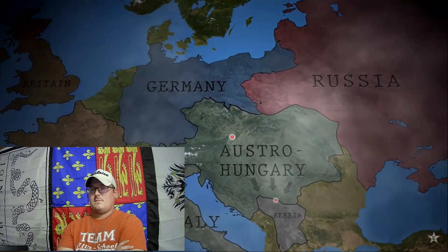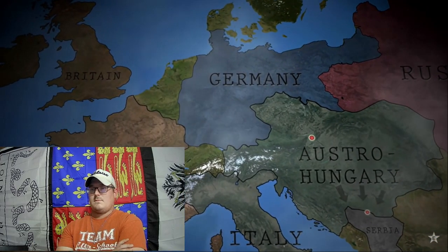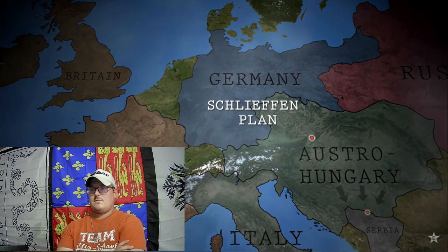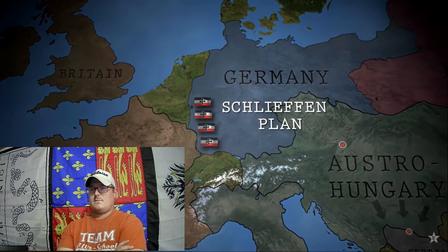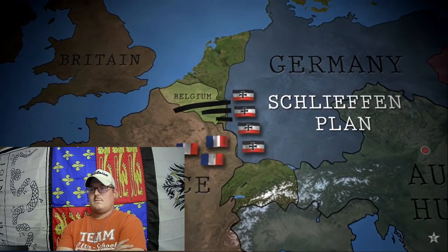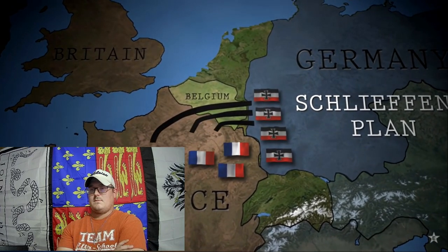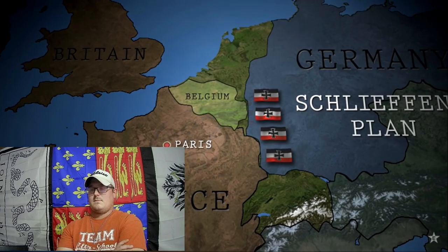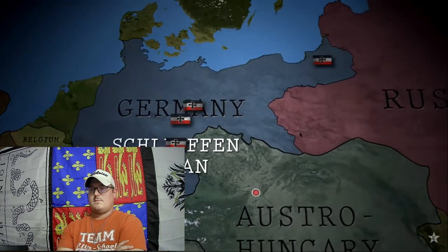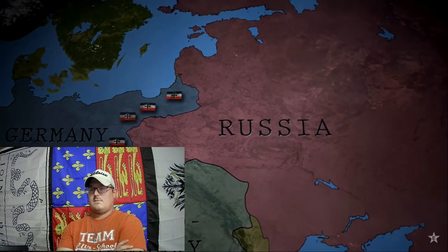Germany knows war with Russia means war with Russia's ally, France. It has developed the Schlieffen Plan to meet this threat of a war on two fronts. First, its armies will advance rapidly through neutral Belgium to encircle and destroy French armies near Paris and win a quick victory. Then its forces can move east to deal with Russia, whose huge army will take much longer to mobilize. And so, Germany declares war on France.